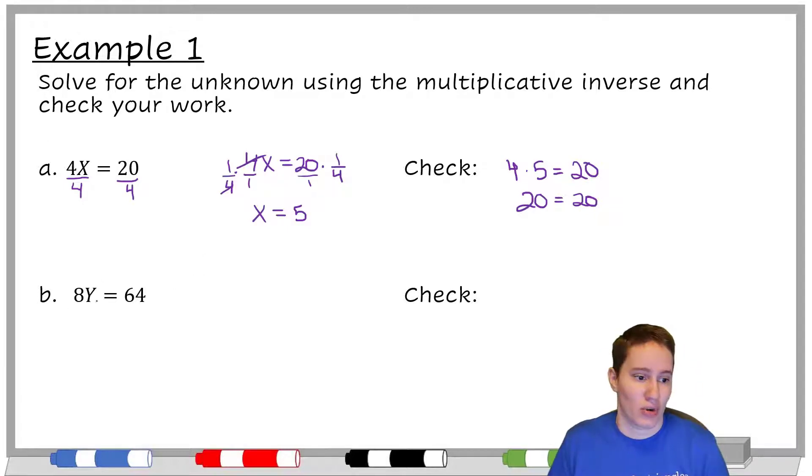So 8y equals 64. You can think in your head about the answer. The work that we would show, the thing we're actually doing, is we're saying, let me divide both sides by that 8 that's in front so that I get y equals 8. And that should be our answer. Let's check it. 8 times 8 equals 64. Is that true? Why, yes. Yes, it is. 64 does equal 64.